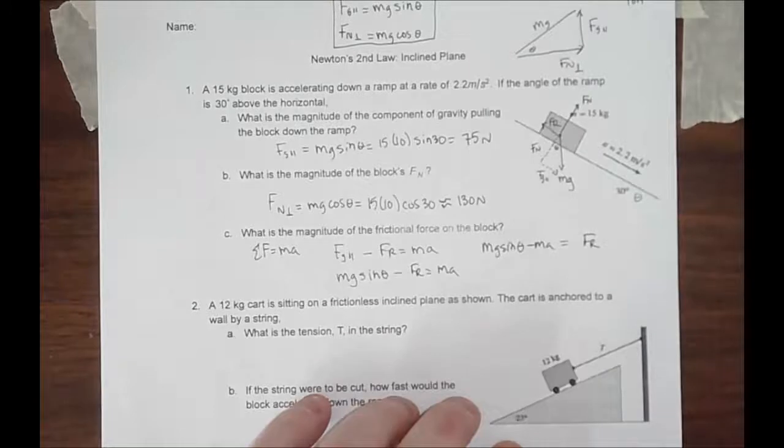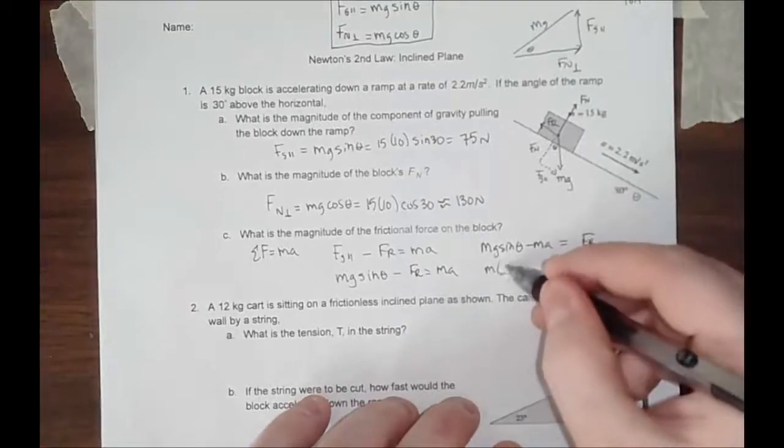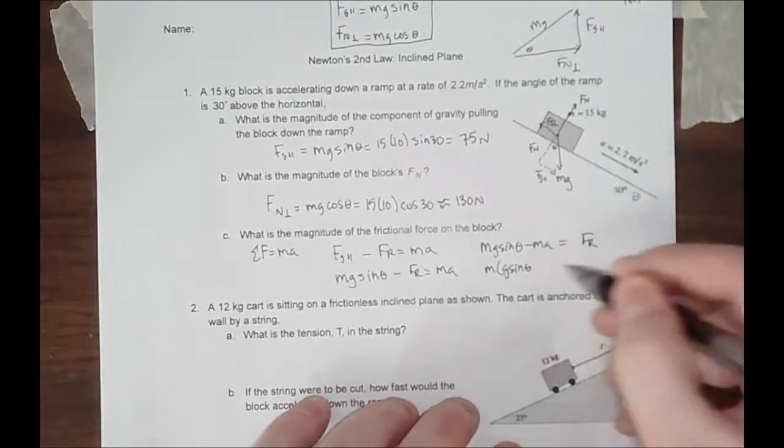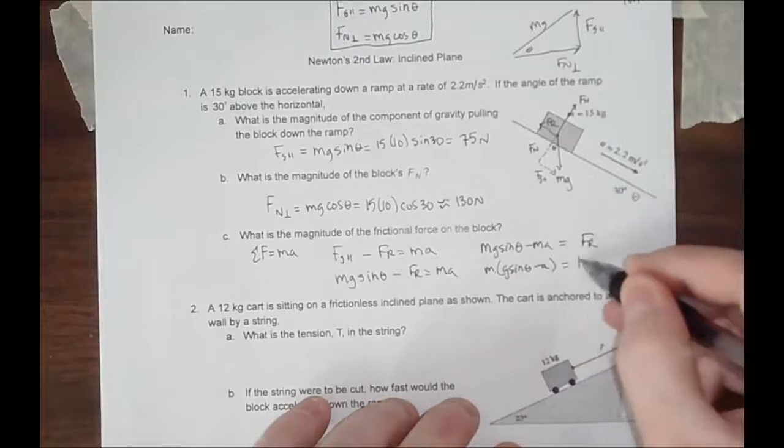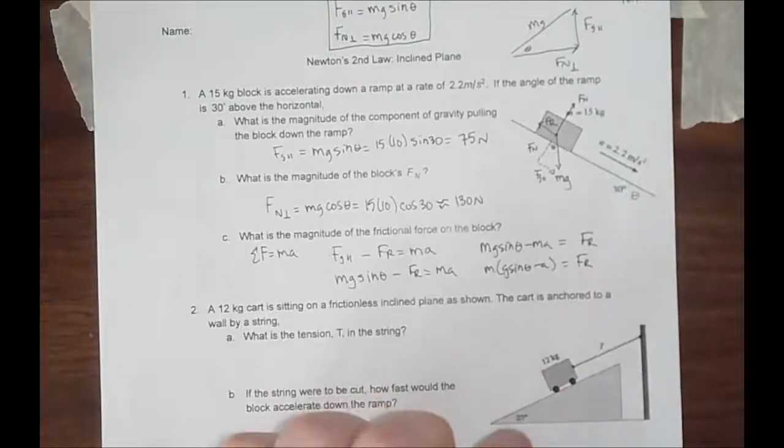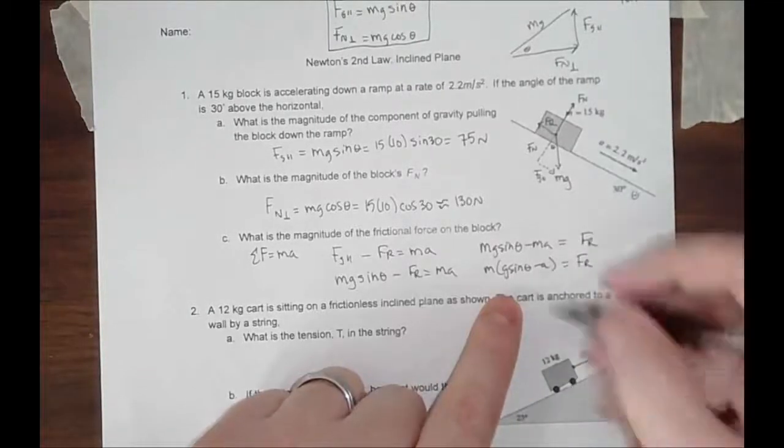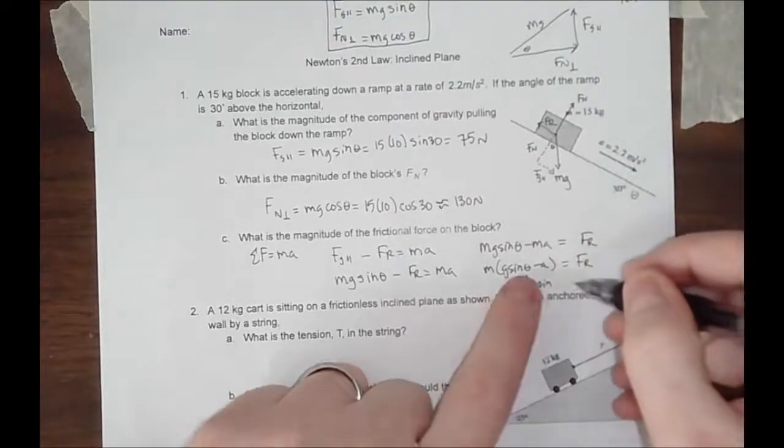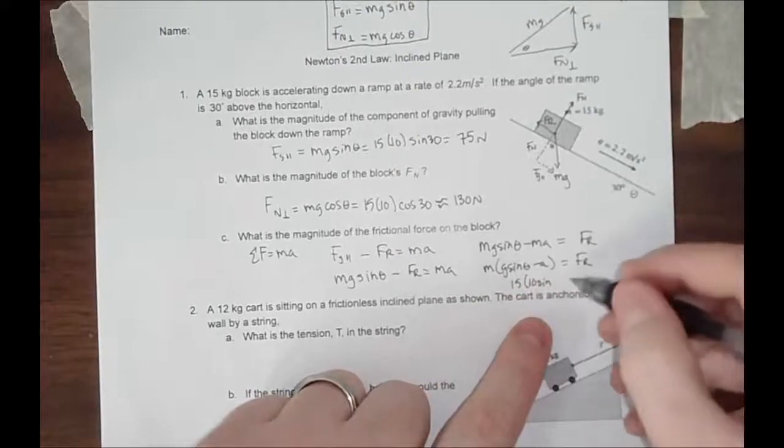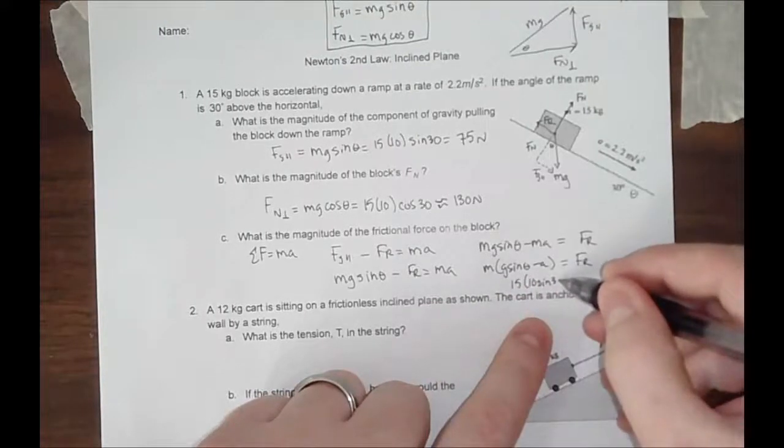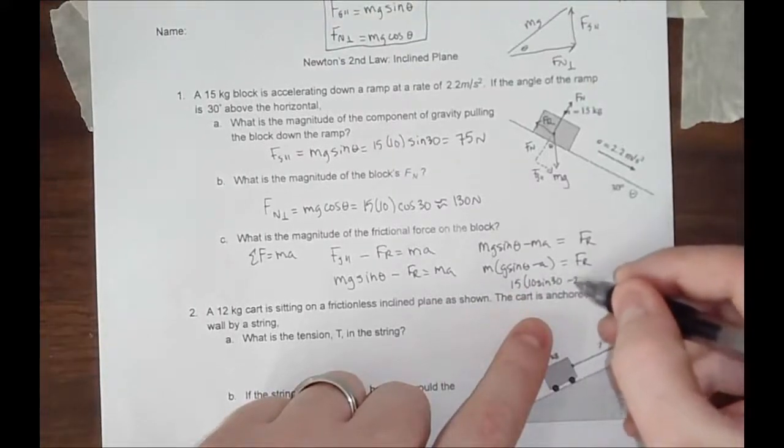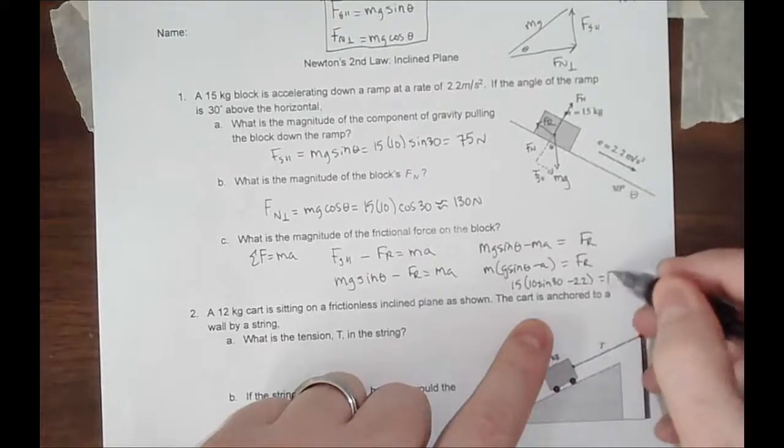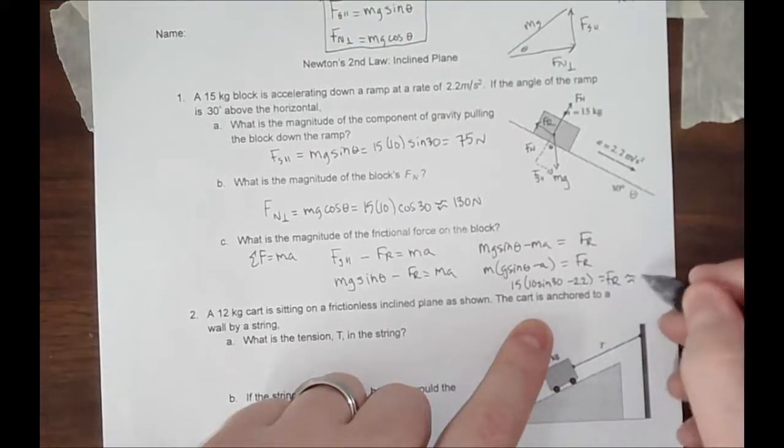So solving for this is 15, 10, sine of the angle, which in this case is 30, minus 2.2. And that gives me a frictional force of approximately 42 newtons.